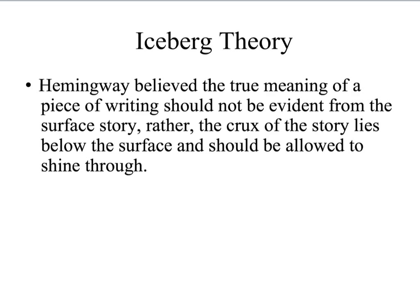Hemingway believed that the more you removed from a story, the more powerful that story could become. He believed the true meaning of a piece of writing should not be evident from the surface story, but rather the crux — the essential piece — lies below the surface and should be allowed to shine through the actual story itself. This was later called the theory of omission. Omission means to leave things out. That is what the Iceberg Theory would have Hemingway do, where he would consciously remove things from the story, leaving the reader to make inferences and guesses and put pieces together, as a way of making the larger message more powerful. This is something Hemingway consciously developed and practiced.